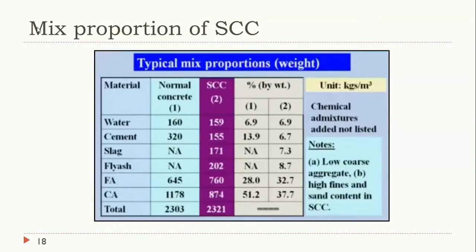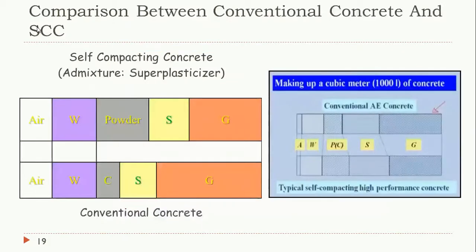Comparing mix proportions of conventional concrete and SCC: in conventional concrete the cement content is around 320 kg/m³, whereas in SCC more fines are added by including slag and fly ash. The coarse aggregate content in SCC is reduced compared to conventional concrete, and the reduction in coarse aggregate is balanced by increasing the fines — slag and fly ash. By reducing coarse aggregate and increasing fines, good self-compacting concrete is achieved.